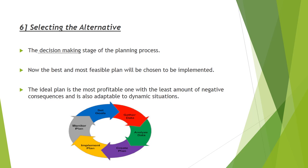The sixth step is selecting the alternative — the decision-making stage of the planning process. The best and most feasible plan will be chosen for implementation. The ideal plan is the most profitable one with the least negative consequences, and one adapted to dynamic situations. The choice is based on scientific analysis and mathematical equations, but a policymaker's experience should also play a big part in this decision. Sometimes, elements of different plans are combined to create one ideal plan.